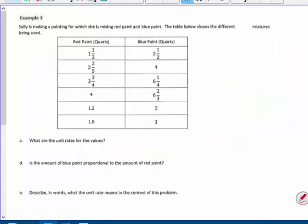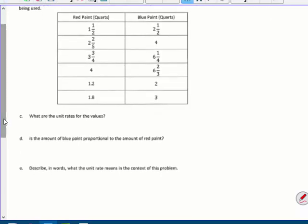Next page. Sally is making a painting for which she is mixing red paint and blue paint. The table below shows the different mixtures being used. What are the unit rates for the values? Well, I'm going to call this the Y and this the X. So, Y divided by X. So, 2½ divided by 1½, or better yet, 5/2. So, this is 2½, 5/2, divided by 3/2, or times 2/3. Then I get 5/3. Which is 1.666666.